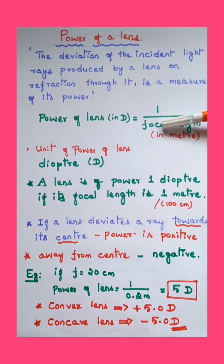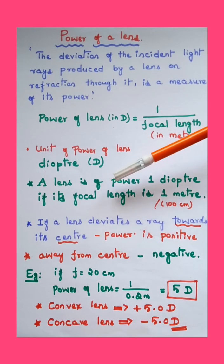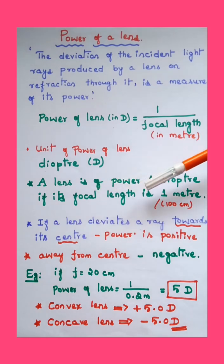He may say power is plus 5 or minus 5. So we define power of a lens is of one diopter if its focal length is one meter. Depending on the direction in which a lens deviates light rays, its power is decided whether it is positive or negative.